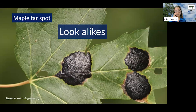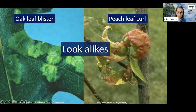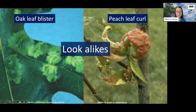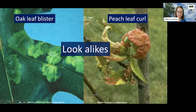The fungus that causes maple leaf blister is closely related to other fungi in the same genus Tephrina that can cause symptoms on other plants. That same Tephrina genus has species that can infect oak leaves and cause oak leaf blister, infect peaches and cause peach leaf curl, and others. You can see that same blistering and distorted leaf growth in those cases — they look a little different from maple leaf blister, but in the same family. All of these are promoted by cool, wet spring conditions.